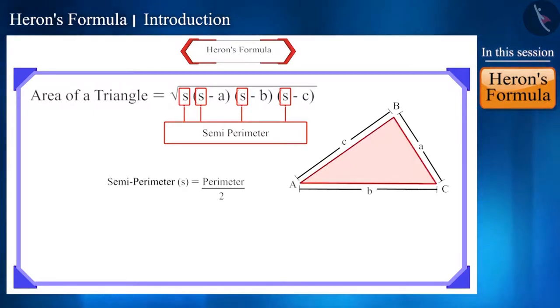If the length of the sides of a triangle a, b, c are a, b and c respectively, then its semi-perimeter is s equals a plus b plus c divided by 2.